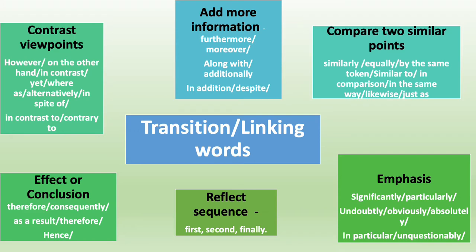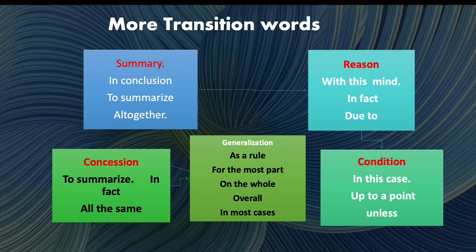Transition words present the writer's thoughts in an orderly manner, clarifying vagueness and demonstrating comparisons. Transition words illustrate relationships between other words and phrases. They are divided into a few categories as they function in different tasks: they add more information, compare two similar points, contrast viewpoints, emphasize ideas, reflect sequence, and show the effect or conclusion. Use these words when and where necessary, but make sure you are not overusing them. You can also learn transition words for summary, reason, condition, generalization, and concession.